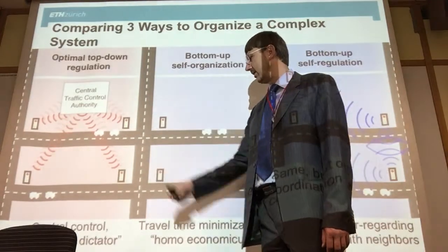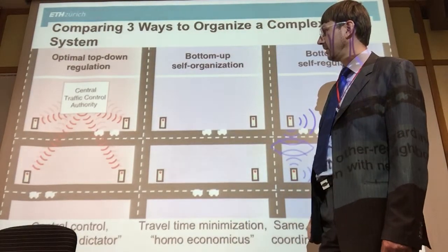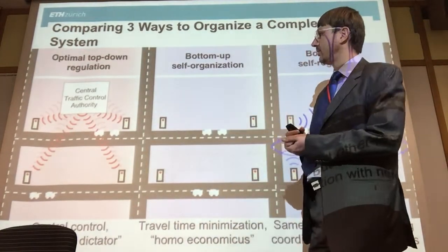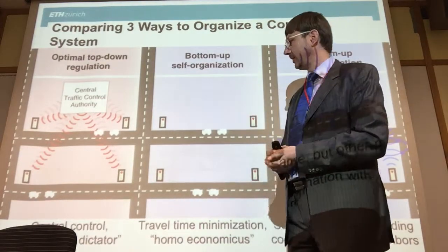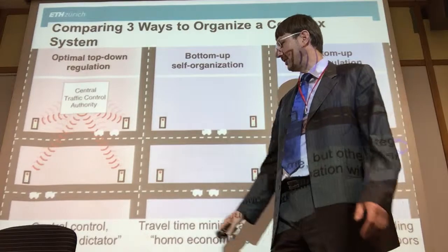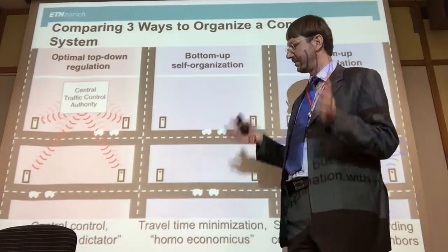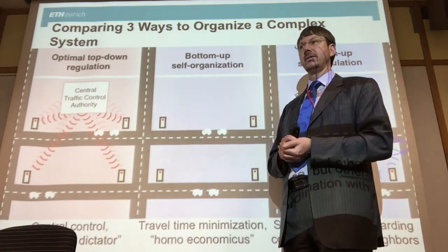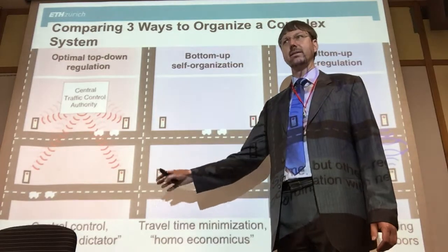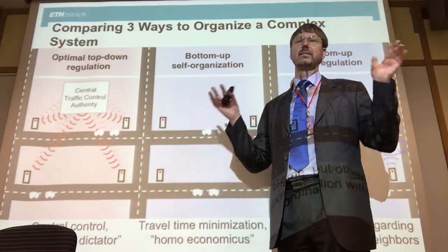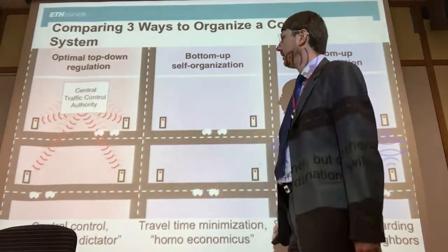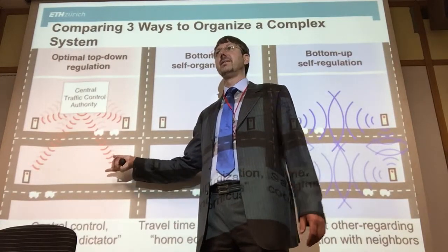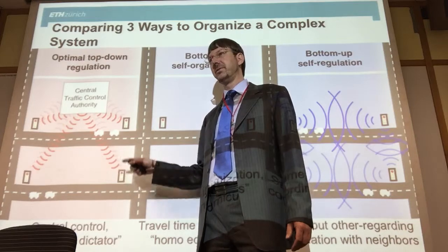The underlying principle: today there's a central control traffic center collecting information from all over the city, trying to do the best it can and implementing this in the entire city — we could call that the benevolent dictator, someone who decides what needs to be done and tries to do it as good as possible. We assume nobody could do it better, so you have the most powerful computer in the world. But still, the optimization problem is so-called NP-hard, meaning even all computer power in the world is not enough to do it in real time.